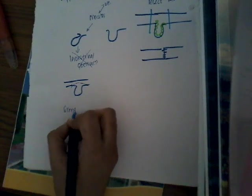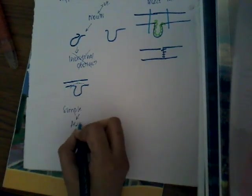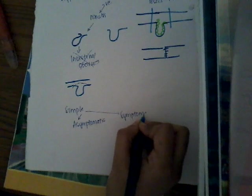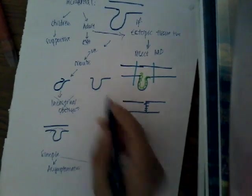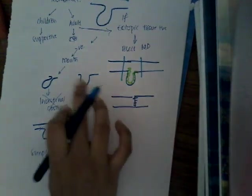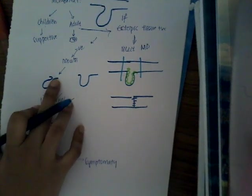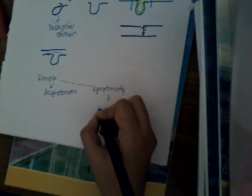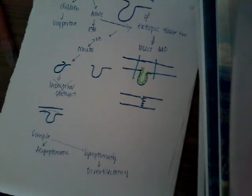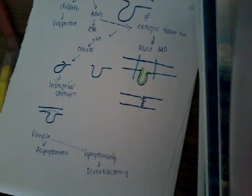For a simple Meckel's diverticulum that is asymptomatic with a wide neck and no ectopic tissue, it can be left alone. If the mouth is narrow or ectopic tissue is present, dissect it. If symptomatic — causing diverticulitis — perform diverticulectomy. If ectopic tissue is present, always do a complete resection. That covers Meckel's diverticulum — thank you for watching.